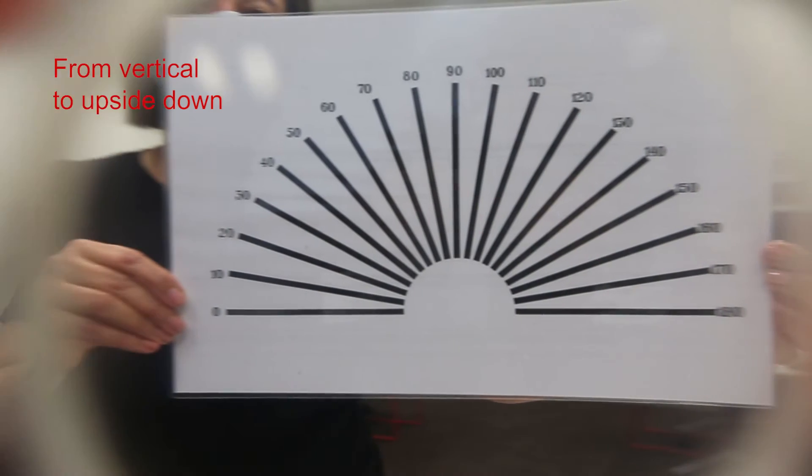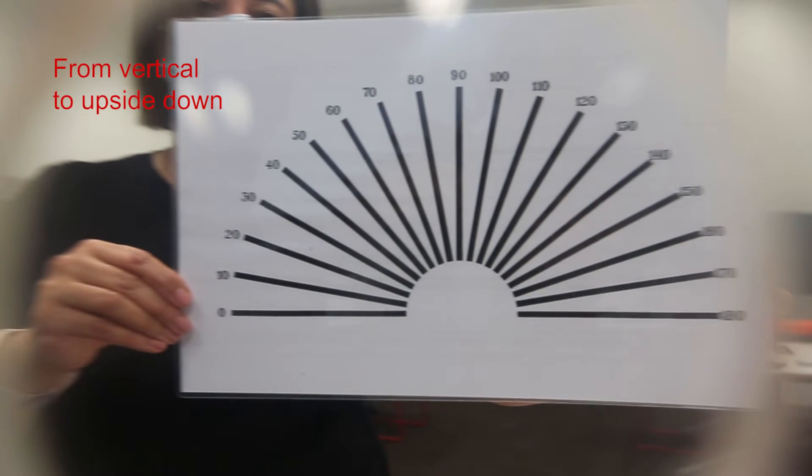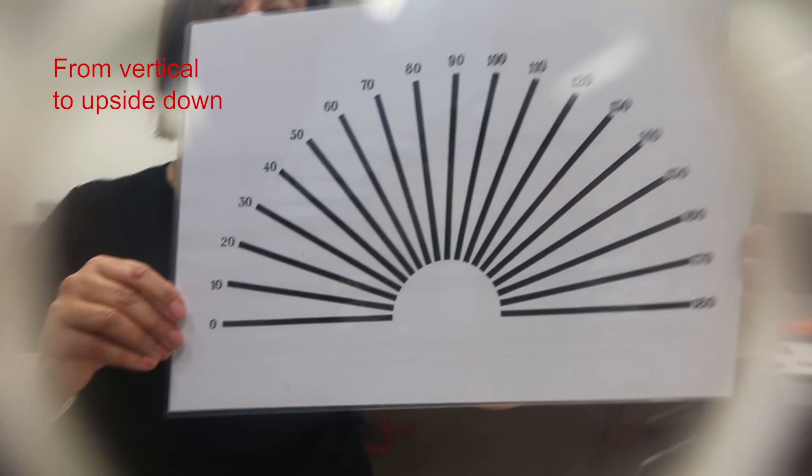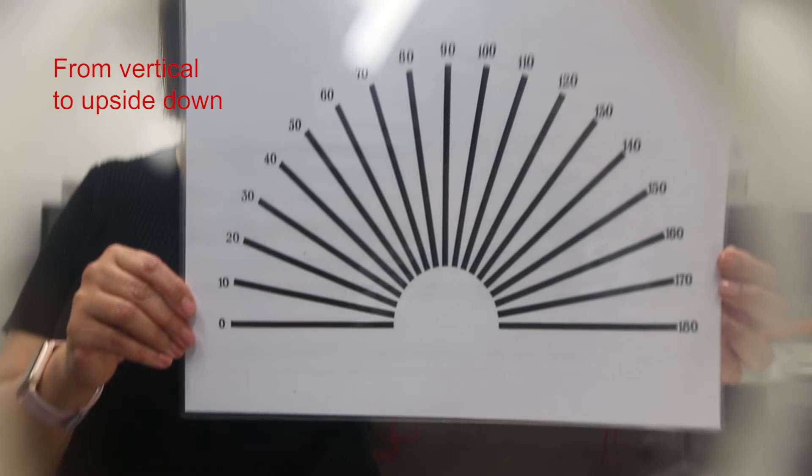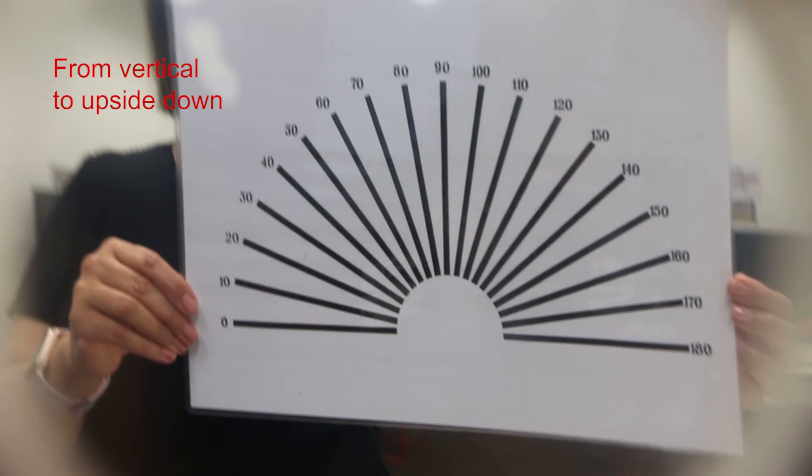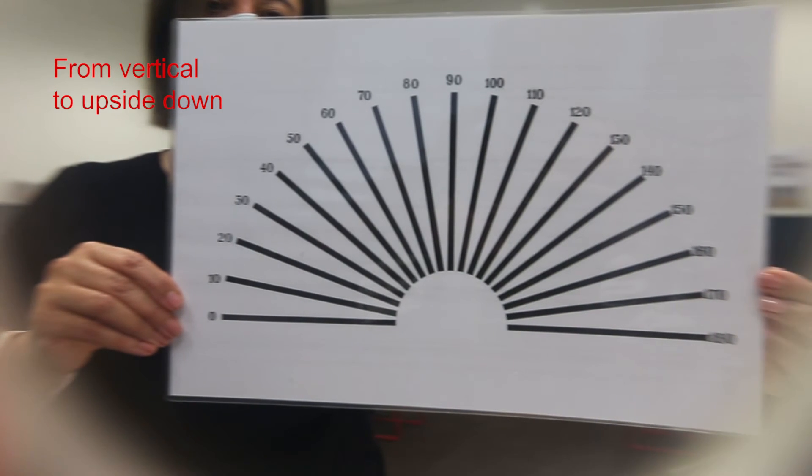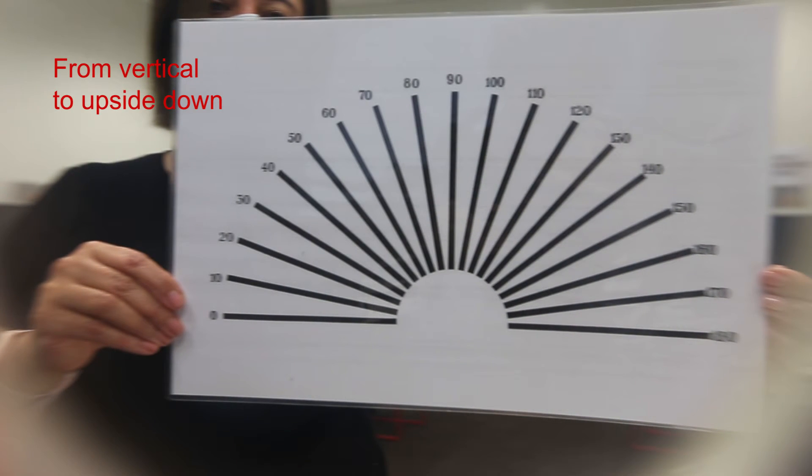Now the lens is oriented vertically again and we're going to rotate the lens clockwise 180 degrees. Once again, did you notice any change in which lines became blurry? In which case make a note.